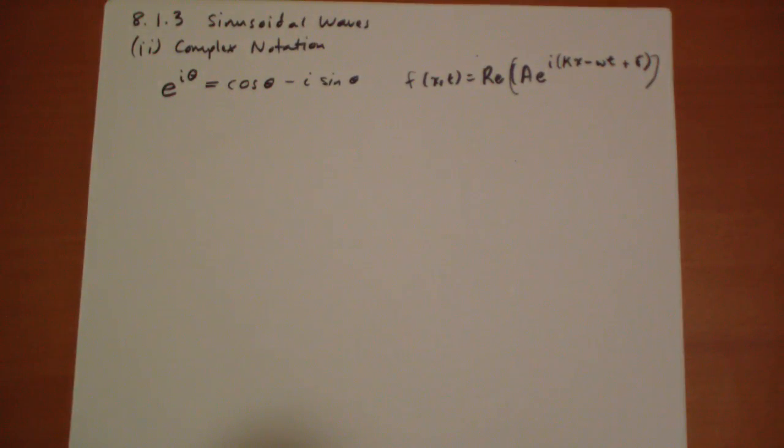And the beauty of this is now you don't have to worry about what's cosine times cosine or anything like that. You can just do straight multiplication using how you know how powers interact with each other.